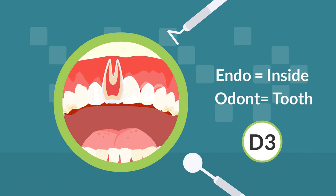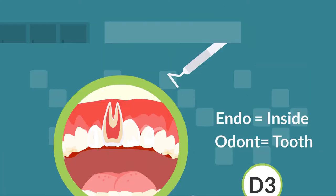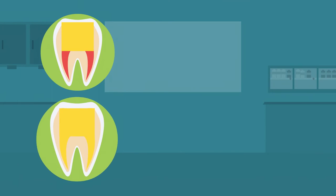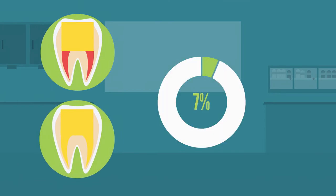Endodontic codes all start with D3. Services include pulpotomy and pulpectomy. Standard coverage is 50%.